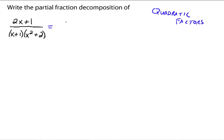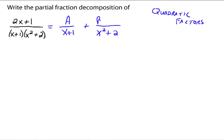For the linear factor, it's the same as before: A over x plus one. What we've been doing all along is writing a numerator expression that is one degree less than the denominator. Our denominators have been linear, so we just had a constant A up top. But now with the quadratic expression x squared plus two in the denominator, the numerator needs to be one degree less — meaning a linear expression, Bx plus C.